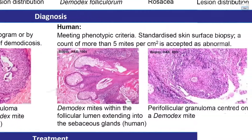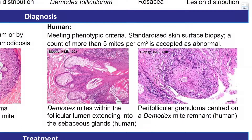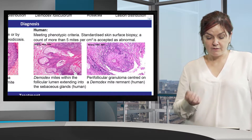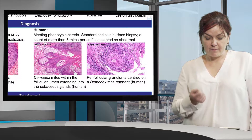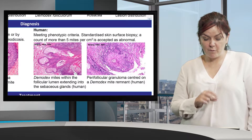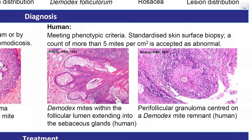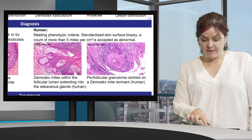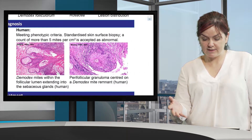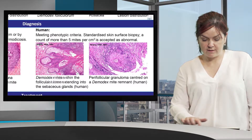The second picture is where the hair follicle has ruptured, releasing the mites into the dermis and eliciting a foreign body type reaction. In humans, diagnosis of demodexosis and rosacea is generally by meeting phenotypic criteria. A standard skin surface biopsy can also be performed, where mites are extruded from the skin using acetate or a slide — more than five mites per centimetre squared is accepted as abnormal. We can see similarities in histology to canine cases, with demodex mites within the hair follicle lumen extending into the sebaceous glands, and similarly, follicle rupture releasing demodex into the dermis.